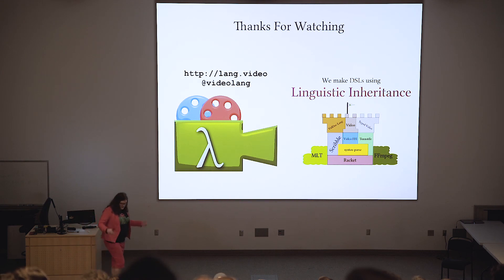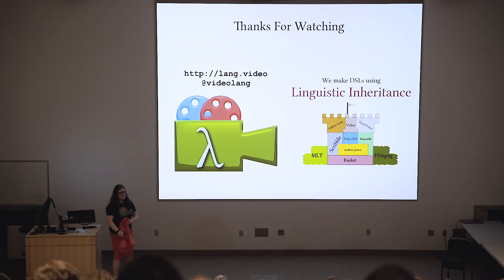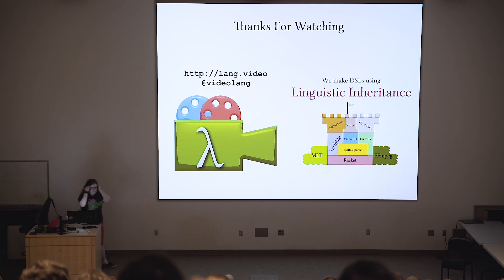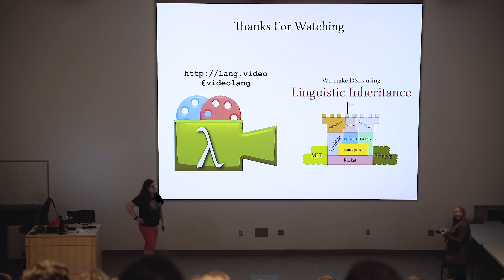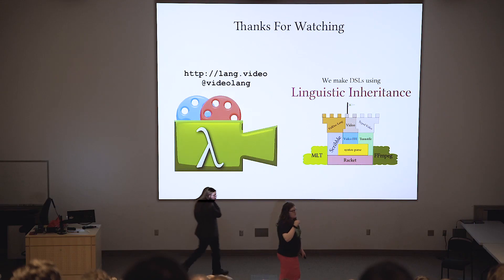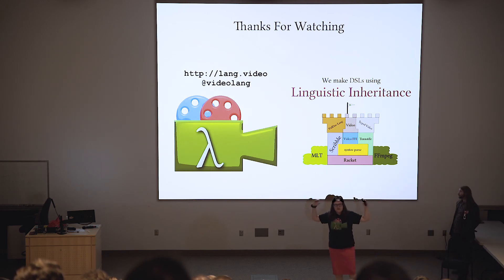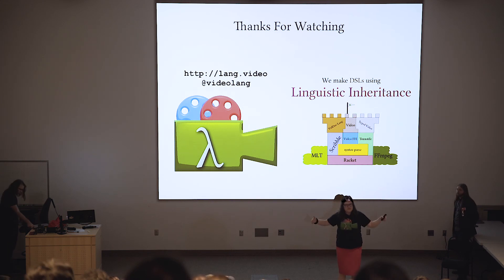Thank you all very much for watching. I recommend you go try #lang video, either from the website or from your local friendly package server. The question was: some clips are infinite in length, like an image. The way this is handled is the multitrack form understands that an image or some producers are infinitely long, so the types there work out and the multitrack is then responsible for cutting the image to the right length.